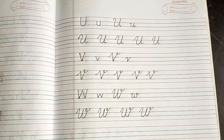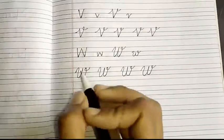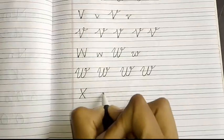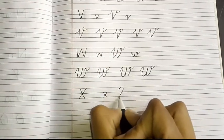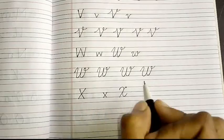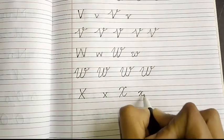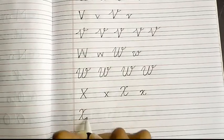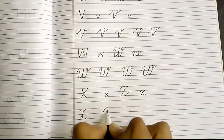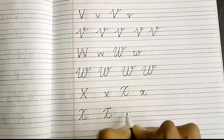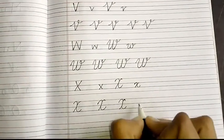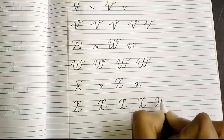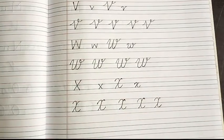Now we will write letter X. Capital X, small X, cursive capital, and cursive small. So, cursive capital practice. Make a C from this side, make a C from this side. Simple. Write it with me. Cursive capital X.